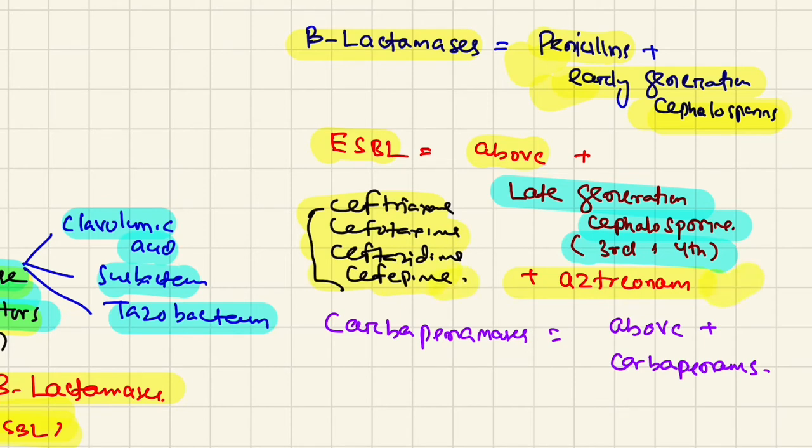If there's resistance against early plus late generation cephalosporins plus monobactam, you're dealing with ESBL organisms. Most antibiograms will write ESBL, but we need this knowledge. With carbapenemases, they're resistant to all the above antibiotics plus carbapenems, so we use polymyxins.